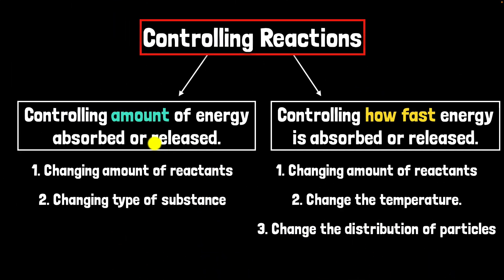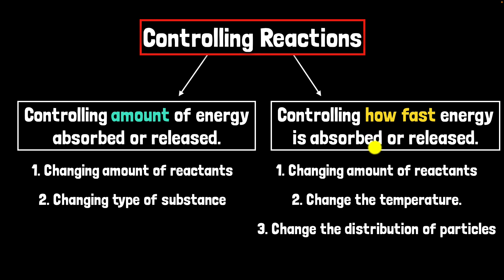In summary: exothermic reactions release energy and endothermic reactions absorb energy. To control the amount of energy, change the amount of reactants or the type of substance used. The rate of energy absorbed or released depends on the number of collisions per second, which can be increased by changing the amount of reactants, the temperature, or the distribution of particles — the more uniformly distributed the reactants, the higher the collision rate and the more energy absorbed or released per second.